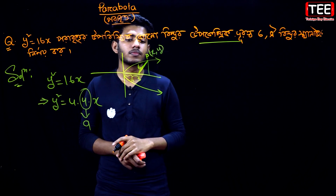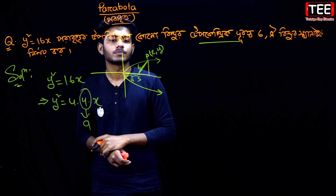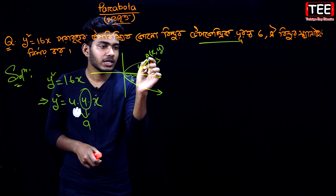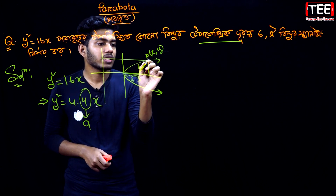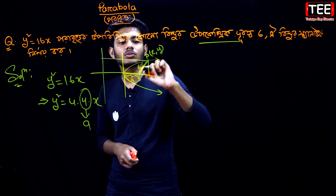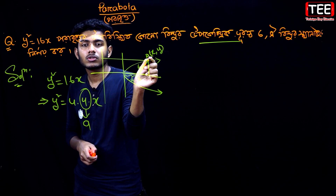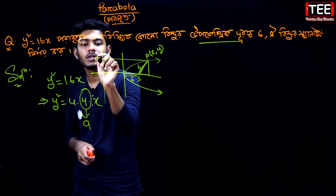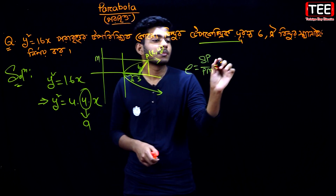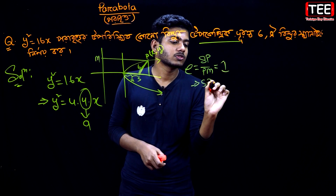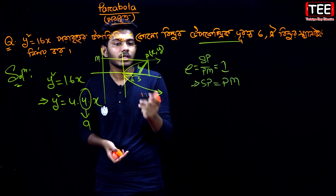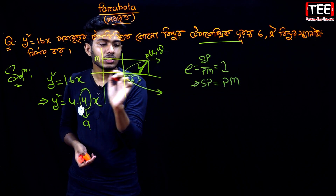So if A is given, then A plus x can be determined, and A will give us a step into P. The focus-directrix property tells us that SP is equal to PM, meaning the distance from a point on the parabola to the focus equals the distance to the directrix. E is equal to SP divided by PM, which equals 1. So SP is equal to PM, and P and P are the same.